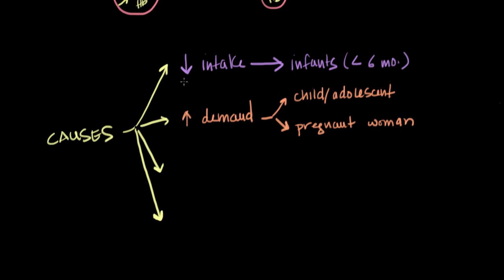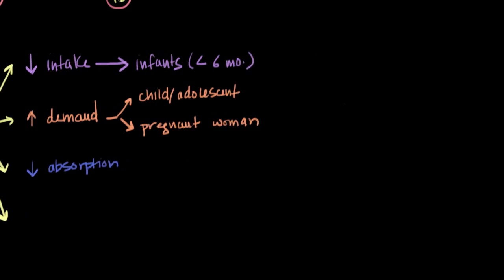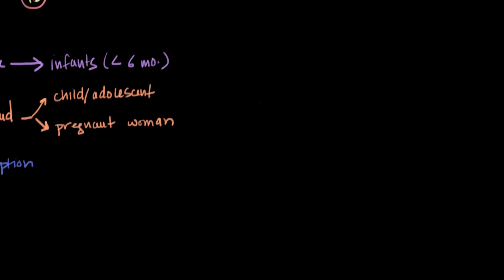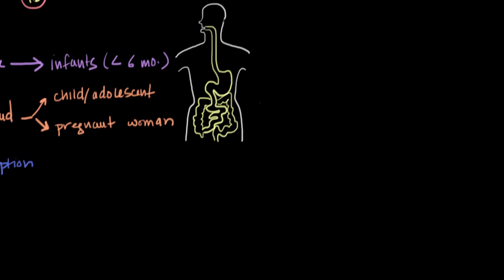Let's say a patient is taking in enough iron through the diet, but that iron isn't making its way through the gut into the body — so there's a decrease in the absorption of iron. To understand this, we need to talk about how absorption normally occurs. When you take in iron through the diet, it goes through the mouth, esophagus, stomach, and then to the duodenum — the point where you really absorb almost all of your nutrients, including iron.